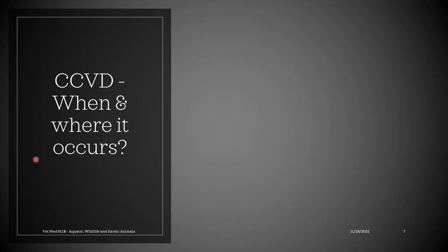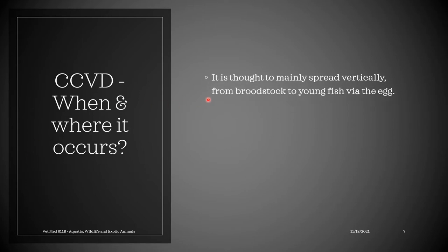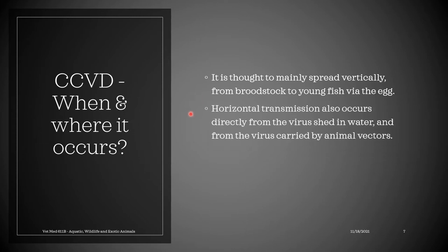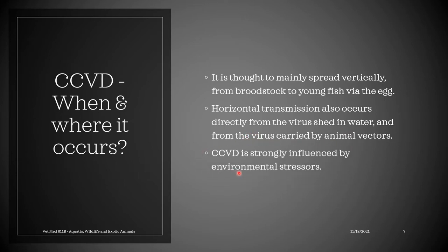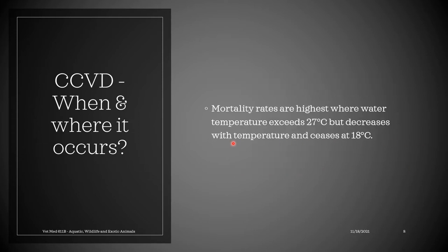When and where does CCVD occur? It is thought to mainly spread vertically from the broodstock to young fish via the egg. Another route is horizontal transmission, which occurs directly from the virus shed in the water and from the virus carried by animal vectors. CCVD is strongly influenced by environmental stressors. Mortality rates are highest where water temperature exceeds 27 degrees centigrade, but decreases with temperature and ceases at 18 degrees centigrade.